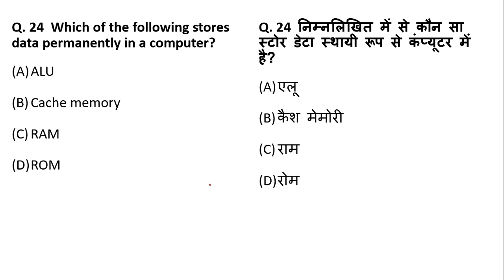Which of the following stores data permanently in a computer? That is done by ROM — Read-Only Memory. Your BIOS information is stored in ROM. The information in ROM is put by the manufacturer; we cannot make modifications to it and it is a kind of non-volatile memory. So D is the right answer.